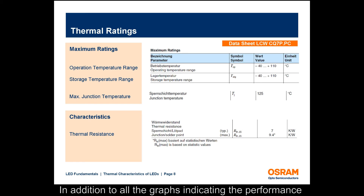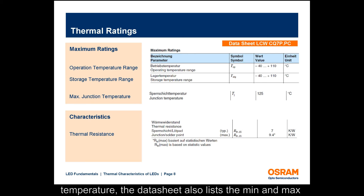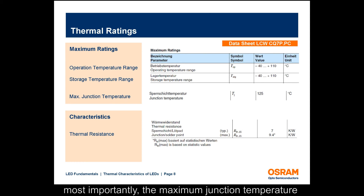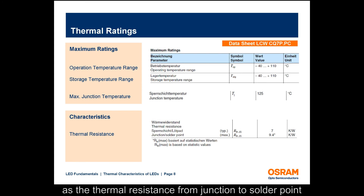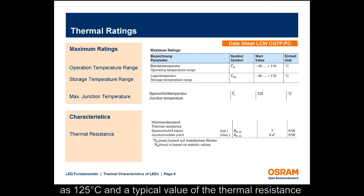In addition to all the graphs indicating LED performance with regards to junction temperature, the datasheet also lists the minimum and maximum operating and storage temperatures of the LED and, most importantly, the maximum junction temperature. One must not exceed this value in system design. An important tool to calculate junction temperature is the internal thermal resistance, listed as thermal resistance from junction to solder point. For the Aslan SSL LED, the datasheet lists the maximum junction temperature as 125°C and a typical thermal resistance from junction to solder point as 7 degrees Kelvin per watt.